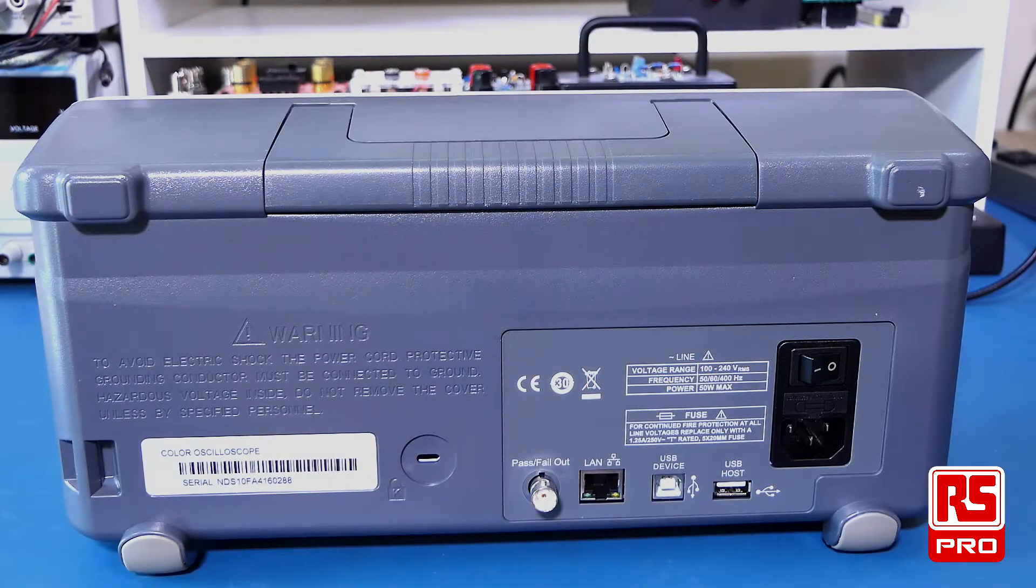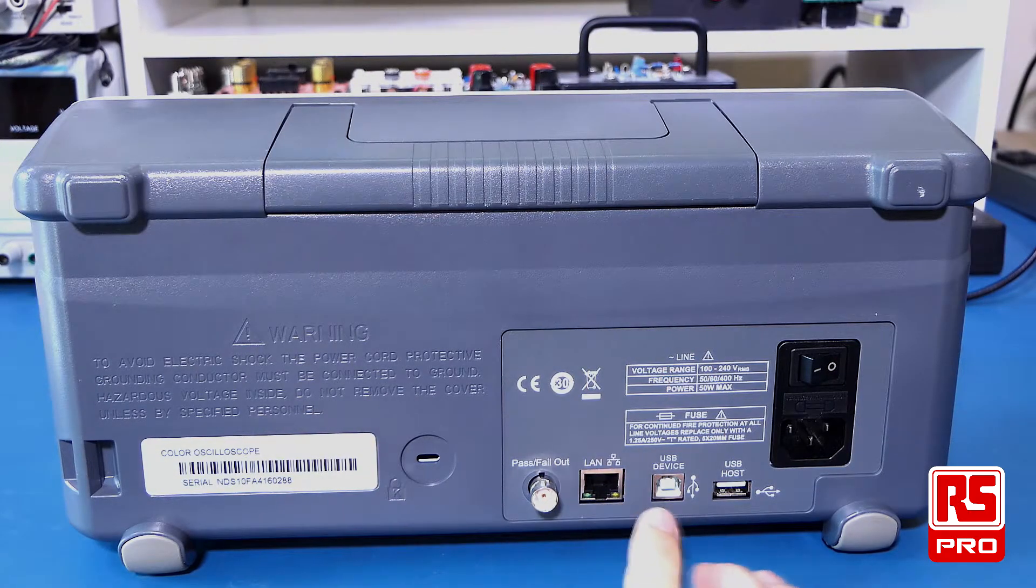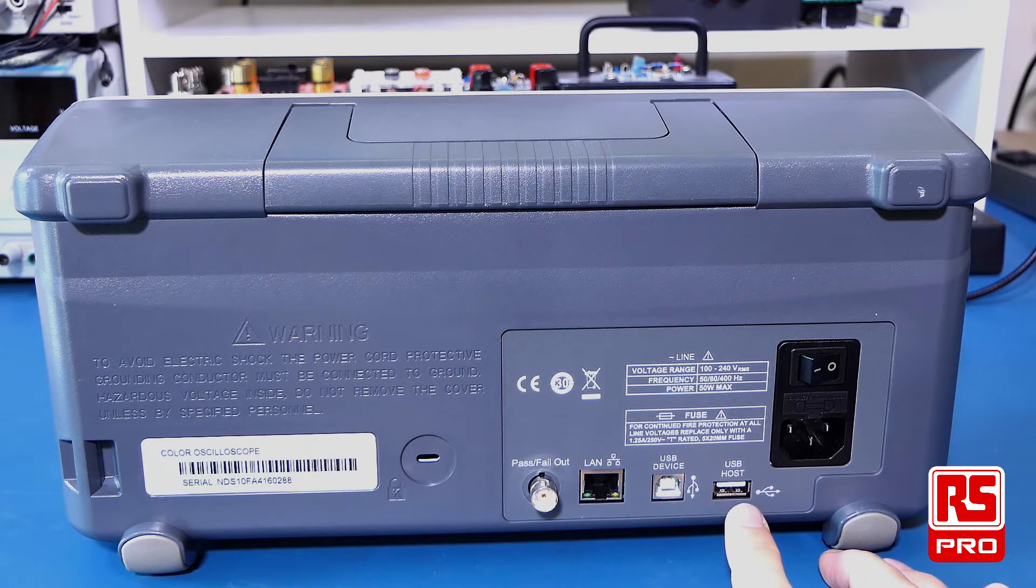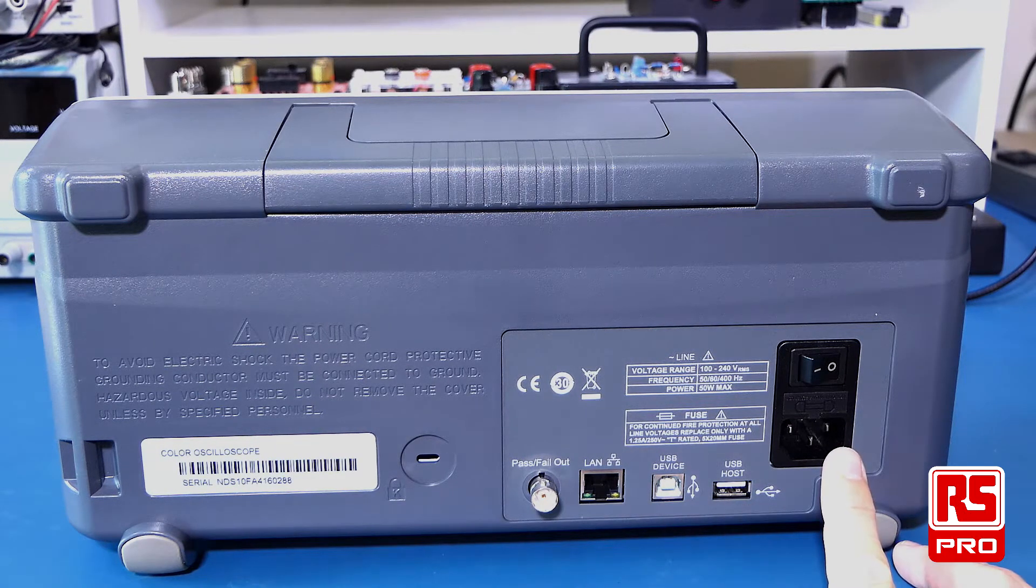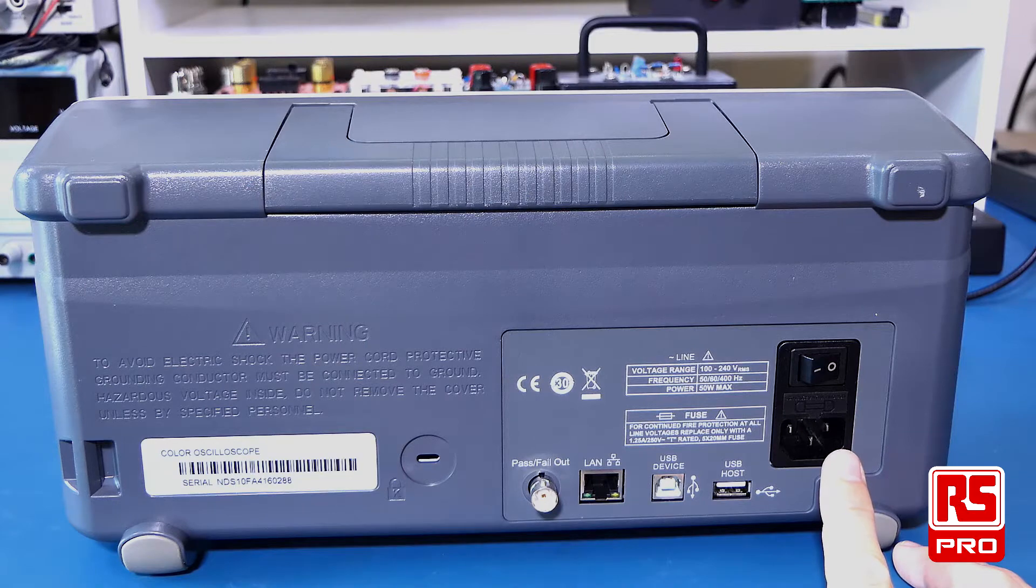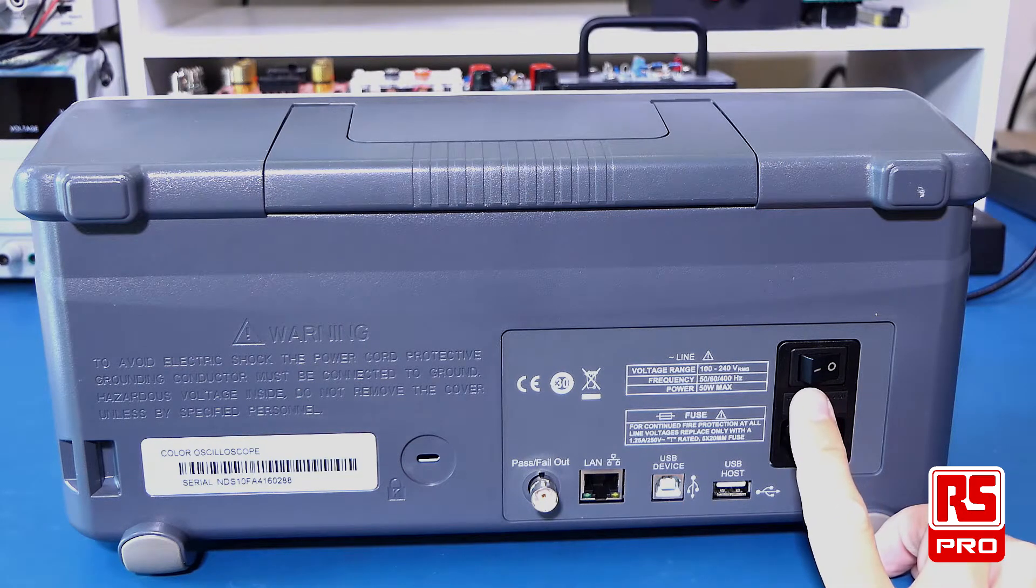At the back of the oscilloscope we have a pass-fail-out, LAN access, USB device, USB host, and your AC power input which is rated from 100 to 240 volts. You also have a main power switch.